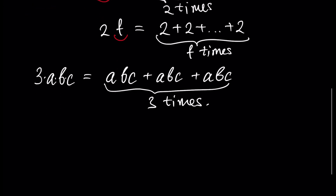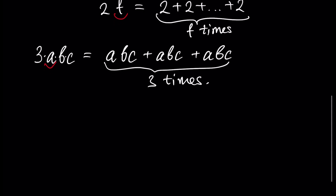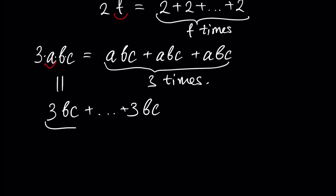We can also say that, for example, a is a coefficient. In this case, we have that 3abc is 3bc plus and so on 3bc, and we have an addition a times. So, this was the concept of the coefficient of a monomial.